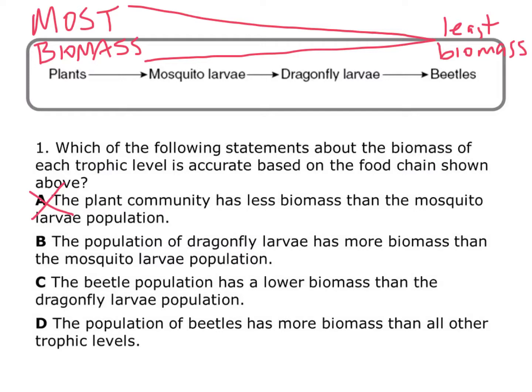Answer B says the population of dragonfly larvae has more biomass than the mosquito larvae population. The dragonfly larvae come after the mosquito larvae in the food chain, so they would not have more biomass — the dragonfly larvae would have less. So B is also not correct.